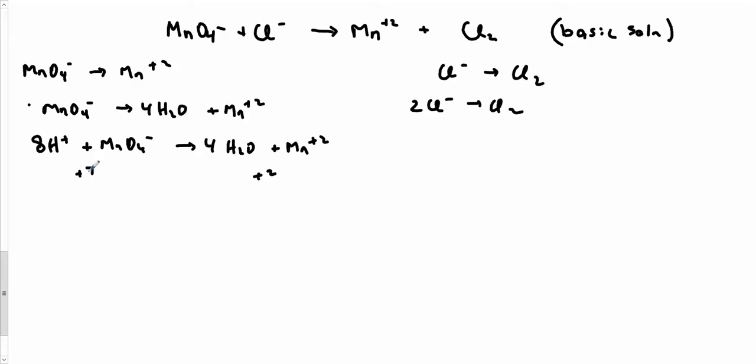Looks like I'm going to need 5 electrons over on this side. So I'm going to put 5E minus, 8H plus, MnO4 minus, 4 waters, Mn2 plus. Here 2Cl minus is giving me Cl2 and 2 electrons.